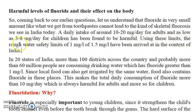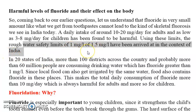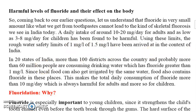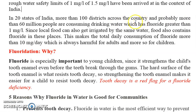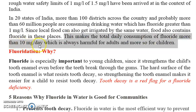Using these limits, the water safety limits of 1 mg per liter and 1.5 mg per liter have been arrived at in the context of India. So in India, the limit is set that water should have a fluoride content of 1 to 1.5 mg per liter only. In 20 states of India, more than 100 districts across the country, and probably more than 60 million people are consuming drinking water which has fluoride greater than 1 mg per liter. Local food grown in that area is also irrigated by the same fluoride-rich water, making total daily fluoride consumption more than 10 mg, which is harmful for adults and more so for children.